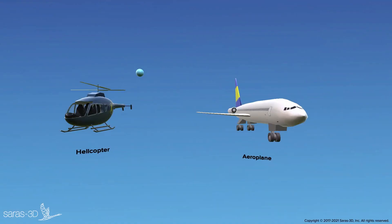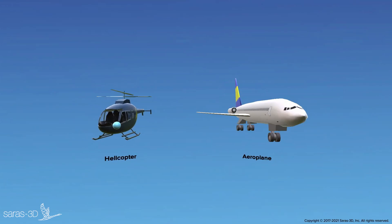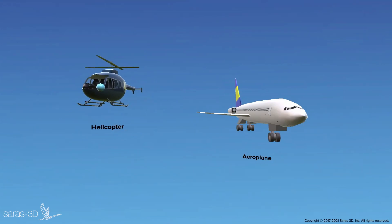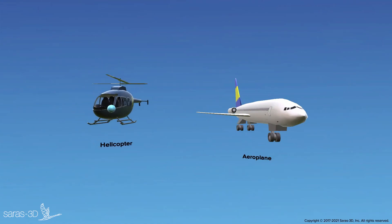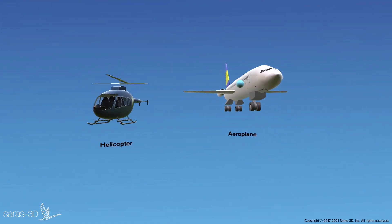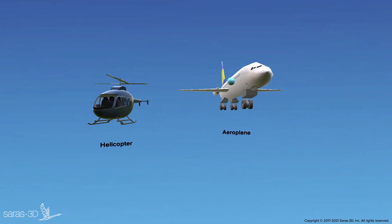Currently, we have several types of aircraft that are divided into two main categories: helicopters and airplanes. Technically, they are referred to as rotary wing helicopters and fixed wing airplanes. In the helicopter, the rotor blades mounted on top — or in some cases on the sides — generate lift, whereas in an airplane, fixed wings generate lift once enough air is flowing over them.